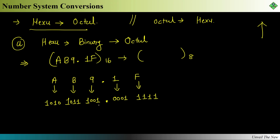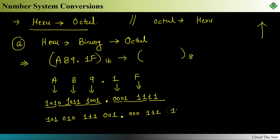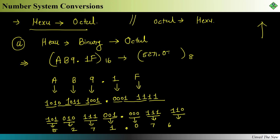Now we convert this binary number to octal by making groups of three digits from right to left before the point. The groups are: 001, 111, 010, and 101. After the point, the groups are: 000, 111, and 110 (adding a zero at the end). Converting each group: 001=1, 111=7, 010=2, 101=5, so the integer part is 5271. After the point: 000=0, 111=7, 110=6. So the answer is 5271.076.